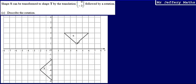This is question 10c. Here we're told that shape S can be transformed to shape T by the translation 0, negative 3, followed by a rotation. We're asked to describe the rotation.